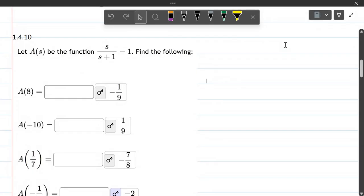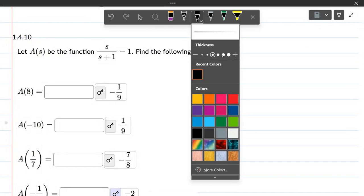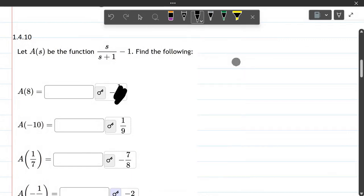In this problem we have a function given to us with an expression and we want to find the function evaluated at some different numbers. I'm going to cover up the answers so I'll just do that right now quickly.